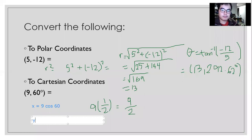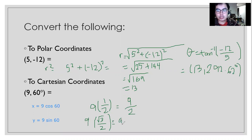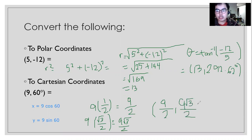Next, we're going to multiply 9 by the sine of 60 degrees. The sine of 60 degrees is the square root of 3 over 2. We multiply 9 by the square root of 3, then copy the denominator, so Y equals 9 times the square root of 3 over 2. That's how we convert from polar to Cartesian. Happy learning, guys. Thank you and God bless.